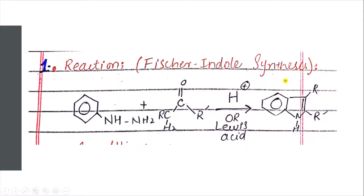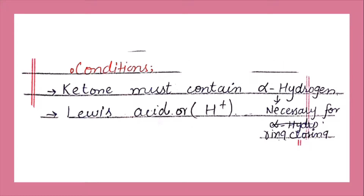This is the reaction of Fisher Indole Synthesis. We have a phenylhydrazine which attacks on a ketone. This ketone has a particular alpha hydrogen — this alpha hydrogen is very useful for the ring closure. This reaction occurs in the presence of an H+ (acid) or a Lewis acid, and as the result we get a substituted indole.